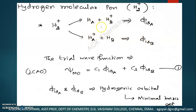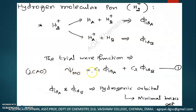Both these are equally possible. Therefore, both these functions are equally contributing in the molecular orbital function of the H₂⁺ ion. So, we take the linear combination of these two. The trial wave function for this system can be constructed using the linear combination of atomic orbitals as: the wave function for the molecular orbital is C₁ multiplied by φ₁ₛ_A, plus C₂ multiplied by φ₁ₛ_B.